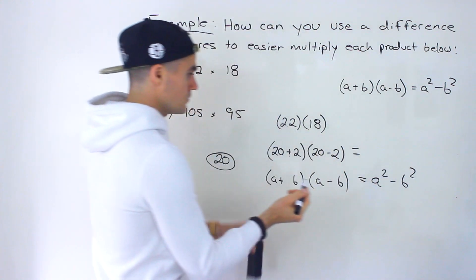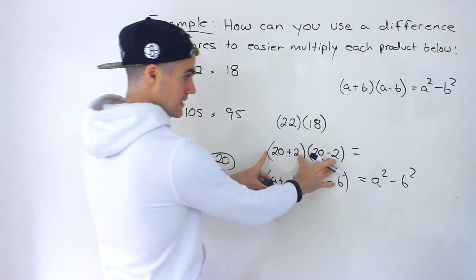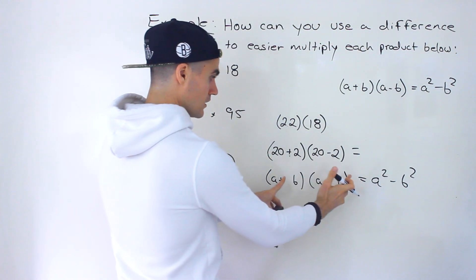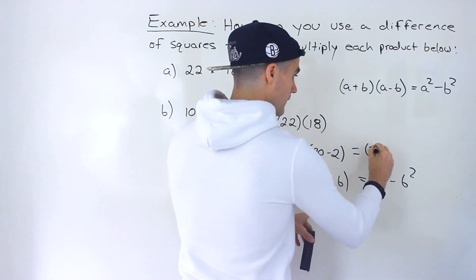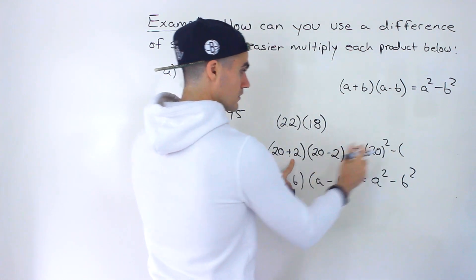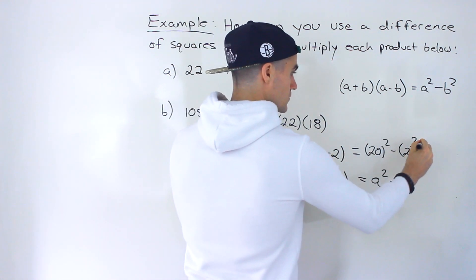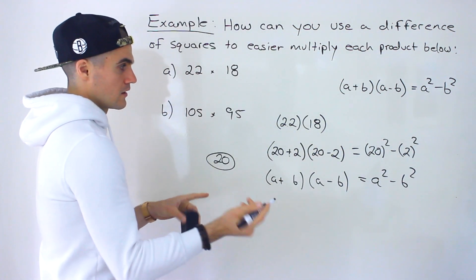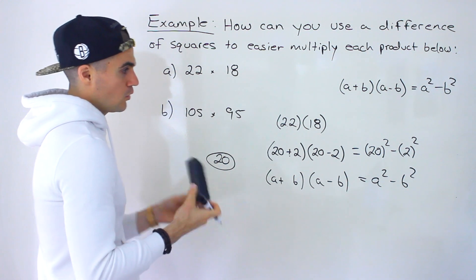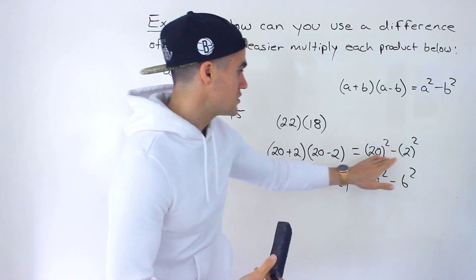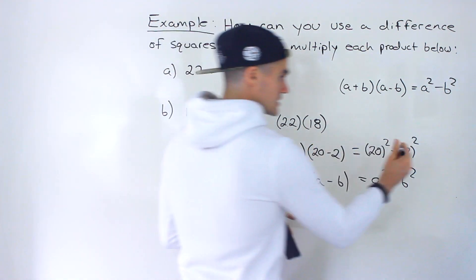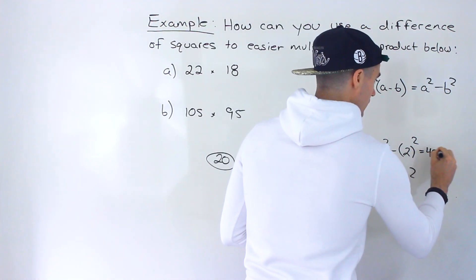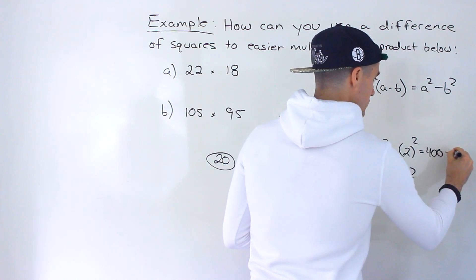And so what we can do we know that this here if we follow this formula we could take the a values which are 20 square them and subtract the b values squared, which is 2 squared in this case. And then from here hopefully these values are easier to work with than these values. 20 to the power of 2 you could tell that that's 400.